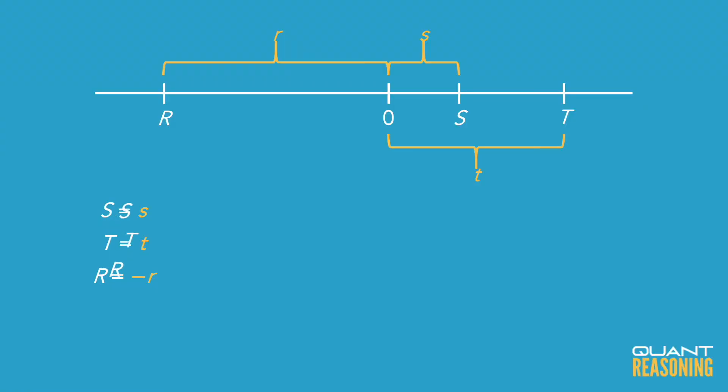Now the question asks for the arithmetic mean or average of uppercase R, S, and T. Based on the definition of average, it would be uppercase R plus uppercase S plus uppercase T, all divided by 3.